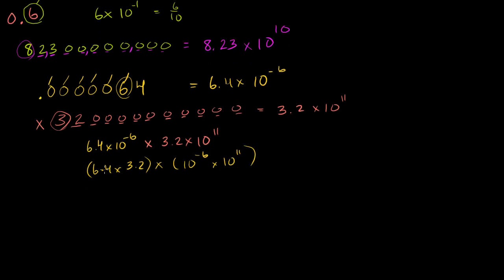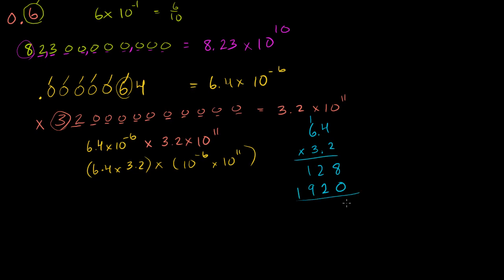Now what will this be equal to? To calculate 6.4 times 3.2, let's ignore the decimals for a second. 2 times 4 is 8, 2 times 6 is 12 — so 128. Then 3 times 4 is 12, carry the 1; 3 times 6 is 18 plus 1 is 192. Adding them up: 8, then 4, then 1 plus 9 is 10, carry the 1, giving 2048. We have two numbers behind the decimal point total, so 6.4 times 3.2 equals 20.48.